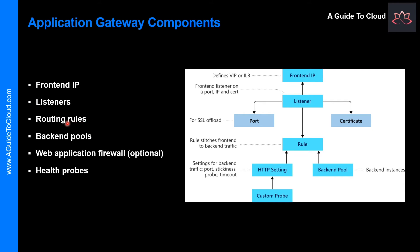A routing rule binds a listener to the backend pools. A rule specifies how to interpret the hostname and path elements in the URL of a request and direct the request to the appropriate backend pool. A routing rule also has an associated set of HTTP settings, which indicate whether traffic is encrypted between Application Gateway and backend servers, and other configuration information such as protocol, session stickiness, connection draining, request timeout period, and health probes.